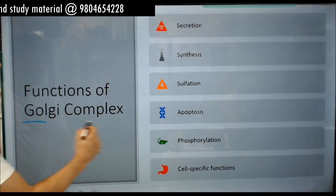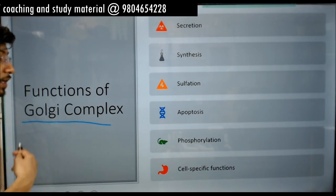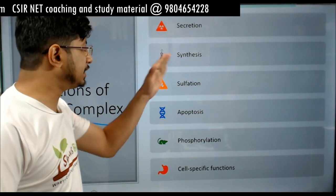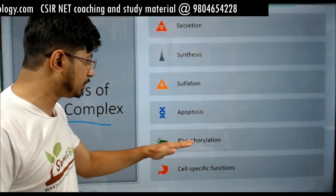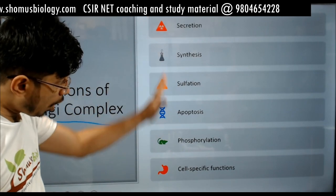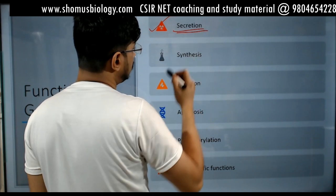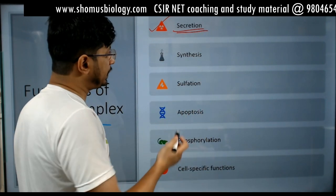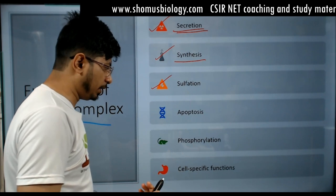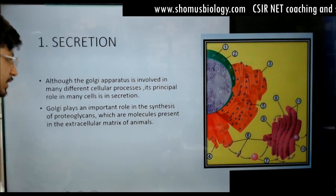The functions of Golgi complex are very important. They include secretion, synthesis, sulfation, apoptosis, phosphorylation, and cell-specific functions. Secretion is the most important primary function. Synthesis and sulfation are also equally important — these three are the major functions of the Golgi apparatus.